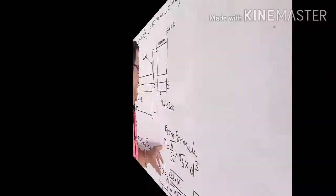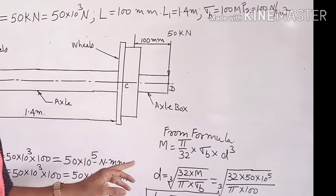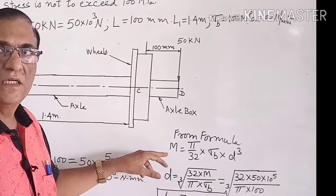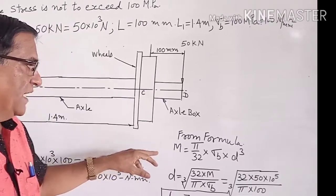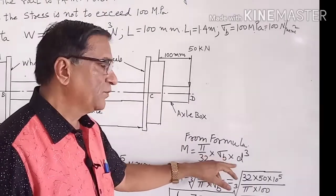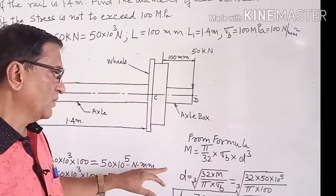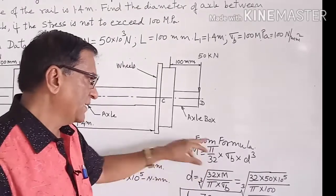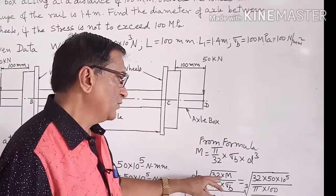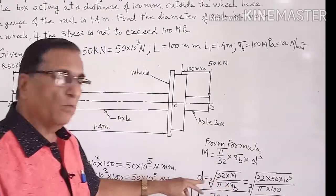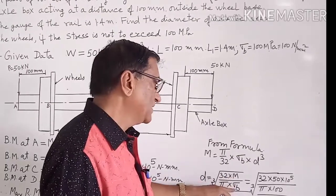Formula for design of shaft subjected for pure bending moment: M is equal to pi by 32 into sigma B into D cube. From this formula, we will reduce this formula. By transferring the values, D is equal to cube root of 32 into M divided by pi into sigma B. Now putting the values of M and sigma B.